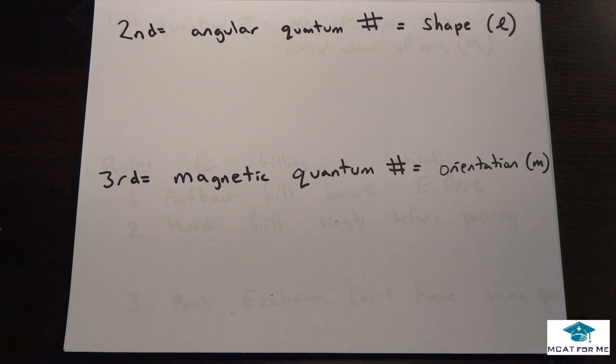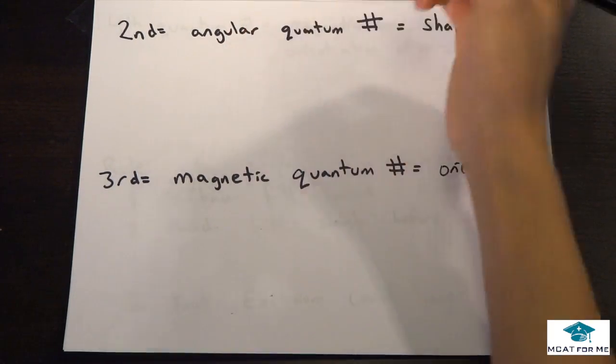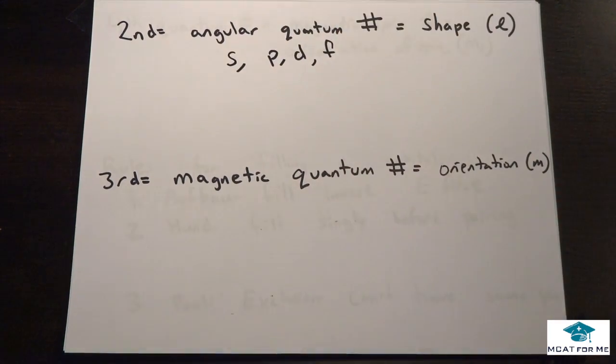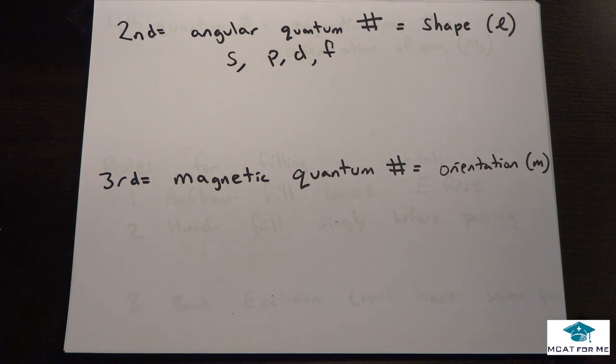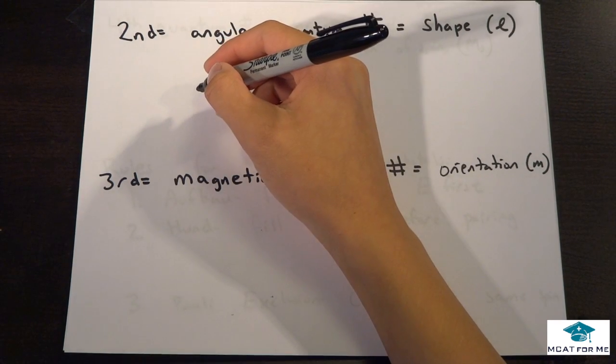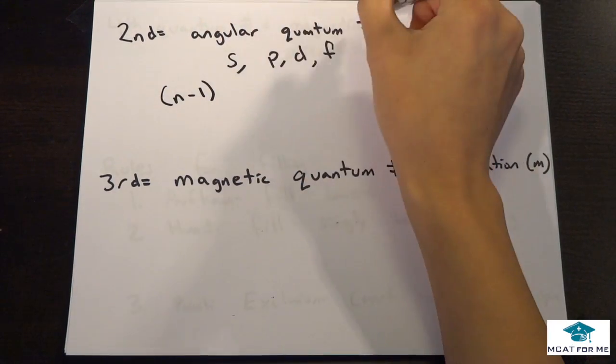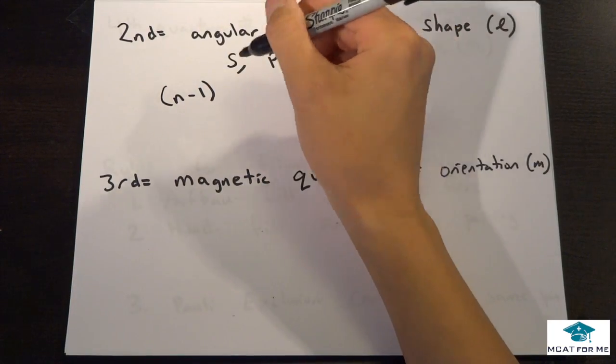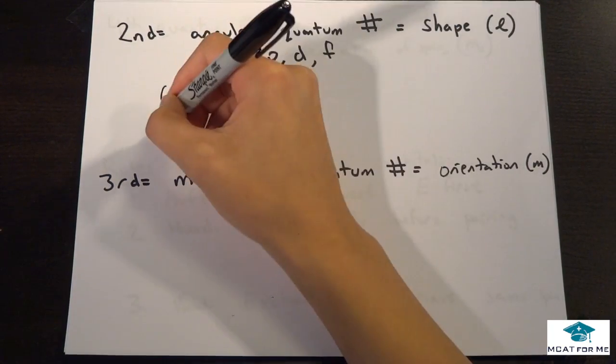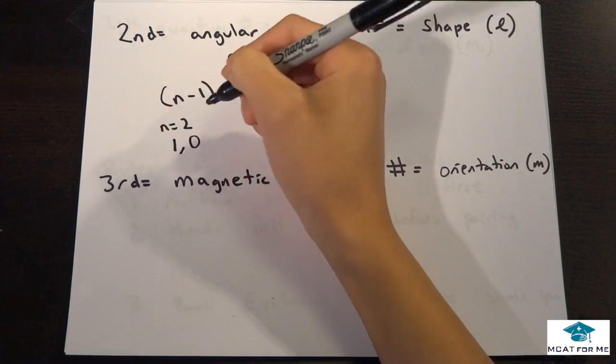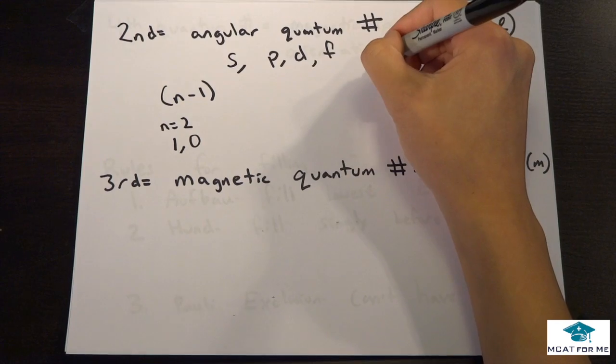And then the second one is something called angular quantum number, and it's dependent on the shape. So we have four different orbitals, S, P, D, and F. And so this is really what the angular quantum number is defining. So the easiest way to do this is if we have an equation, n minus 1. So our angular quantum number can be anything n minus 1. So say our principal quantum number, n equals 2, that means that the angular quantum number can be 1 or it can be 0.